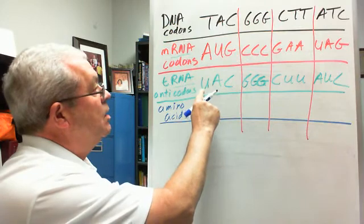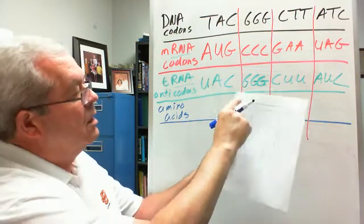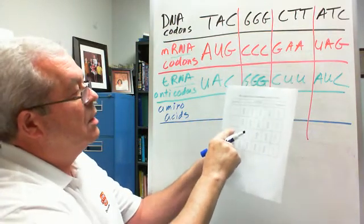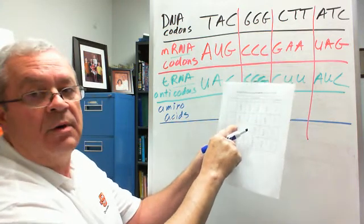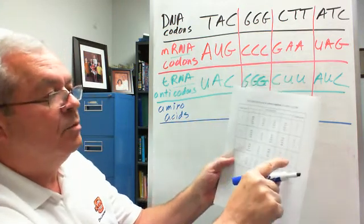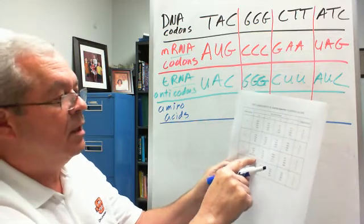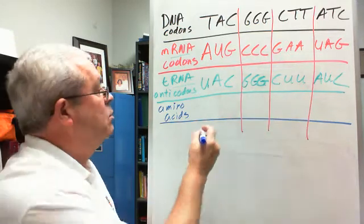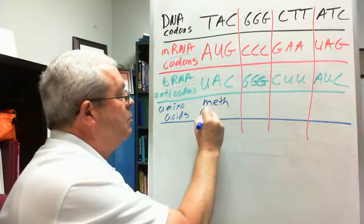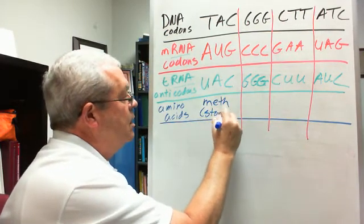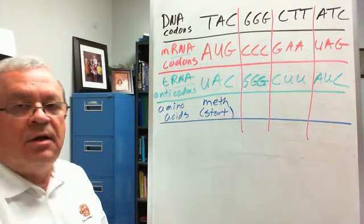Our first anticodon is UAC. So first base U, second base A, that brings us right to this box right here. And third base C, we bring that on across and we see a double duty codon. And it says meth, parentheses, start. And so it is a start codon.